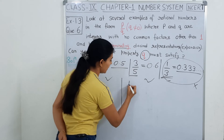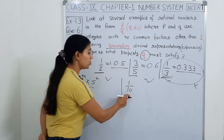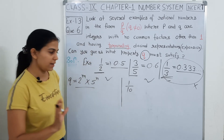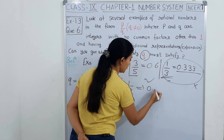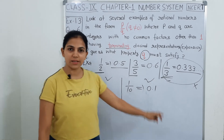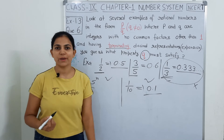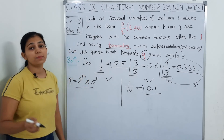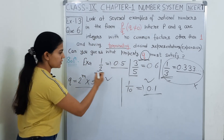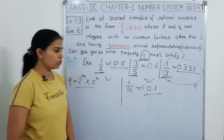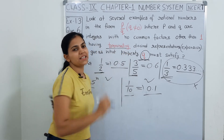अब इसके लिए भी एक example देख सकते हो आप. मानलो हमने एक example ले लिया जिसमें 1 upon 10 ले लिया. 10 को आप क्या लिख सकते हो? 2 × 5 — तो इसमें 2 की भी power आ रही है और 5 की भी. और इसको आप solve करोगे तो क्या आएगा answer? 0.1 — यही आएगा ना, 1 upon 10 को solve करोगे. तो यह कौन सी decimal expansion आ गई? Terminating decimal expansion है ना? तो हमारी यह बात prove हो गई कि जो हमारा Q है वो या तो 2 की powers में हो, या फिर 5 की powers में हो, या फिर दोनों की powers में हो — तभी हमारी decimal expansion terminating आएगी.